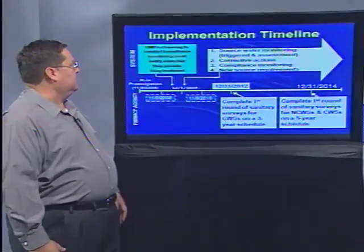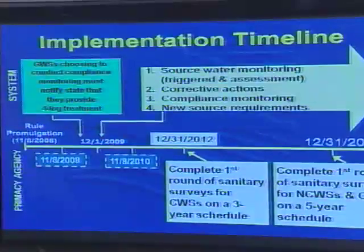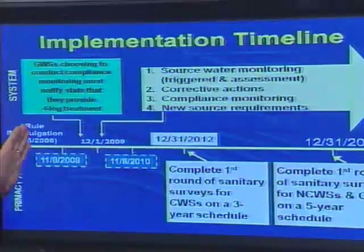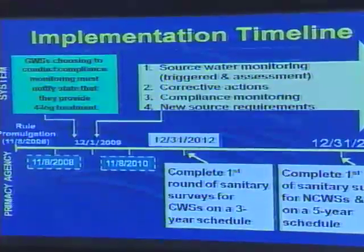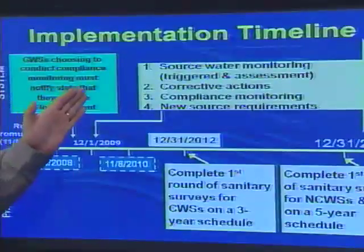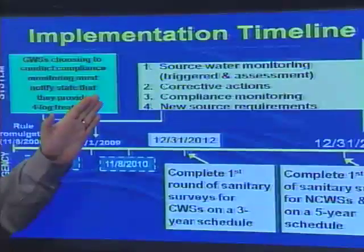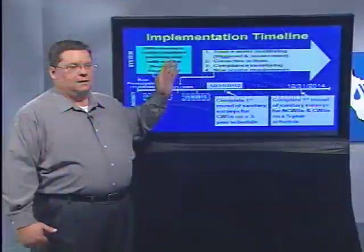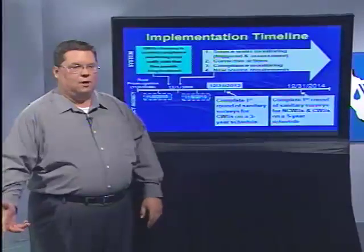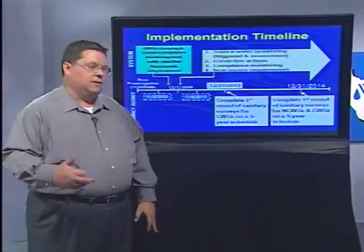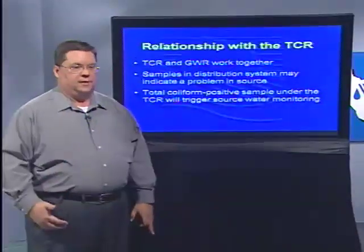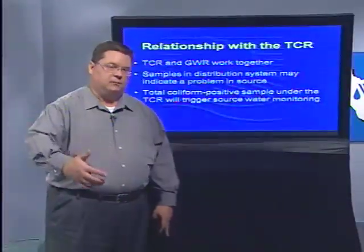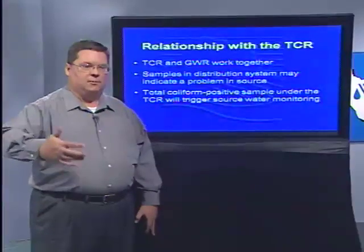Here is an interesting implementation timeline. The rule was initially started back in 2006 or earlier, and as we move forward we're getting very close to the compliance date of December 1st of 2009. We would expect most systems to have already chosen a strategy for compliance — either to go the route of four-log treatment or to submit a trigger source monitoring plan. Sanitary surveys have already started here in Texas; we've been doing those all along.